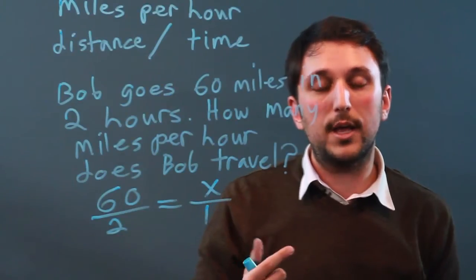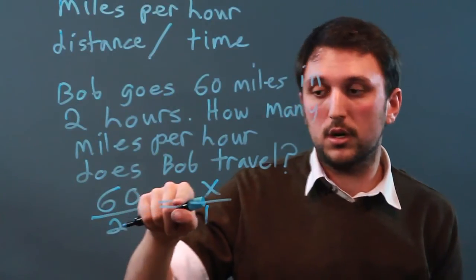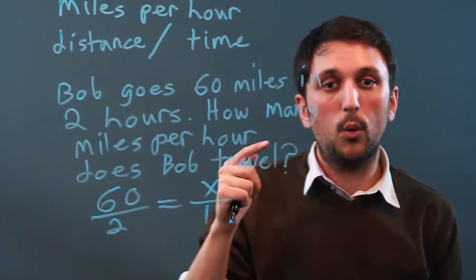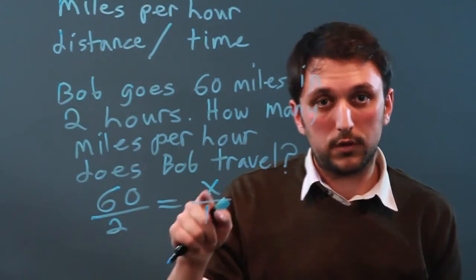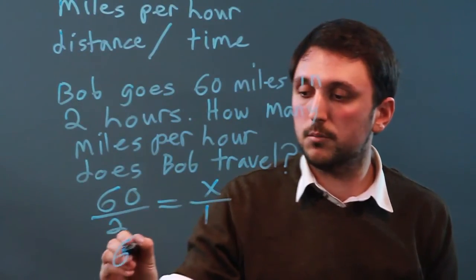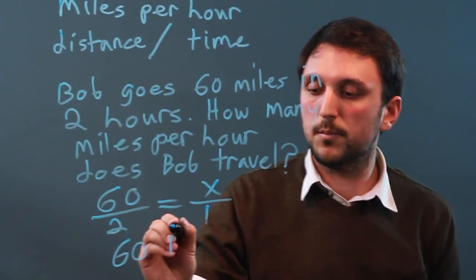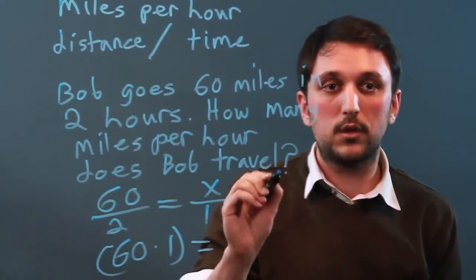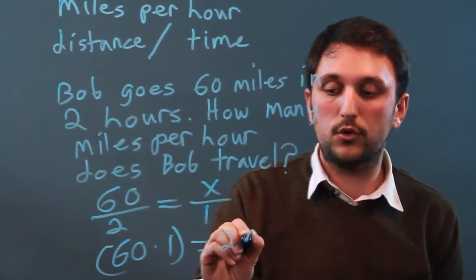So now we have a fraction, an equal sign, and a fraction. What do we always do? Cross multiply. So 60 times 1 equals x times 2, or 2x.